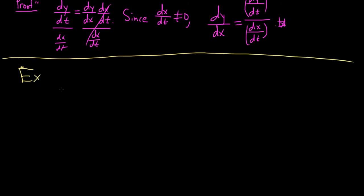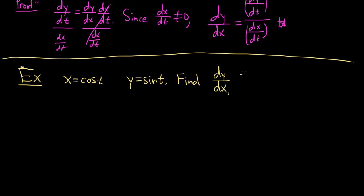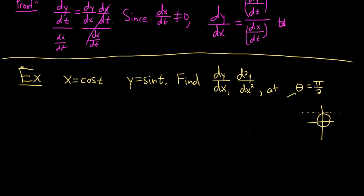Let's go back to a really simple example — the unit circle. So x equals cosine t, y equals sine t. Let's find the first derivative dy/dx and the second derivative, and evaluate them at t equals pi/2. At pi/2 the derivative should be 0 because we have a horizontal tangent line there.